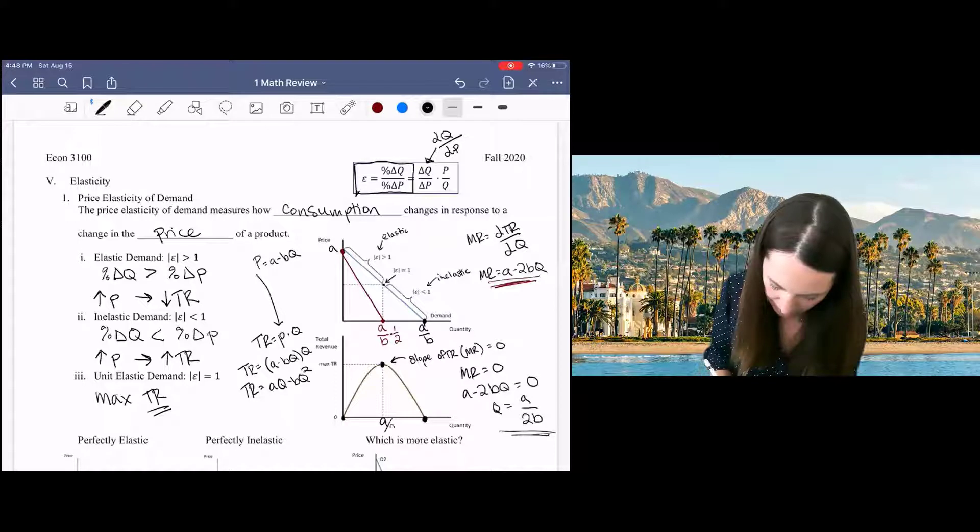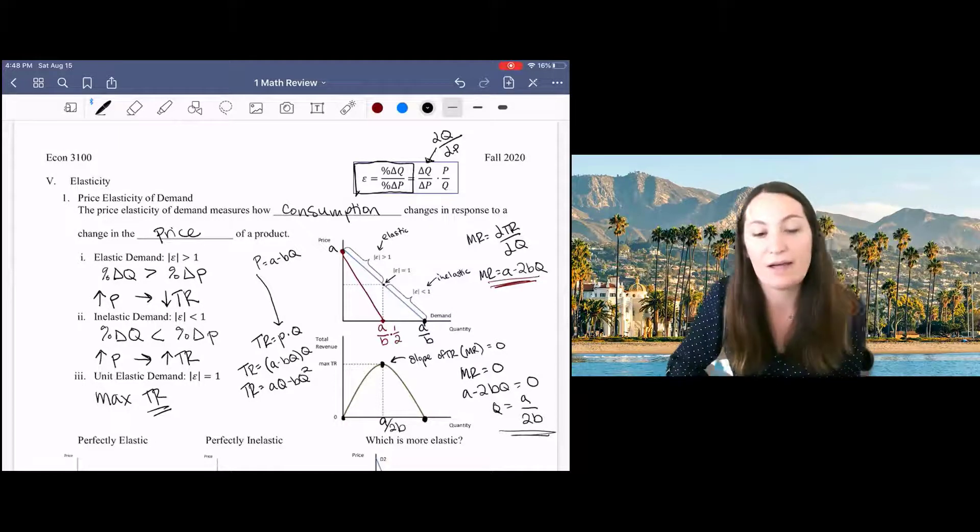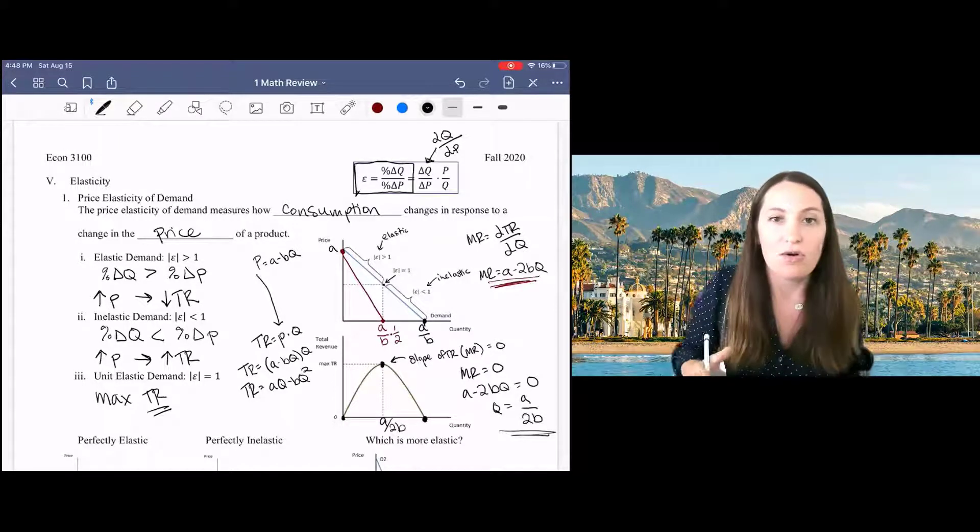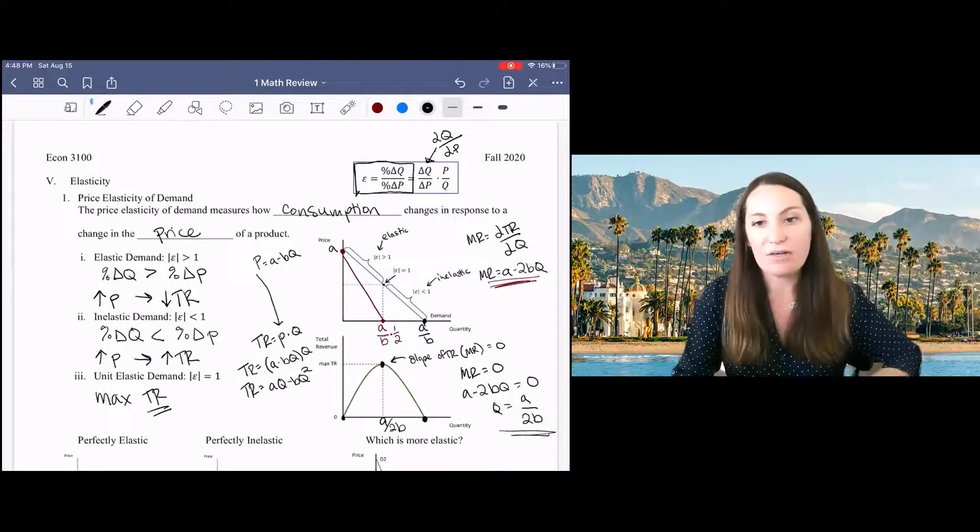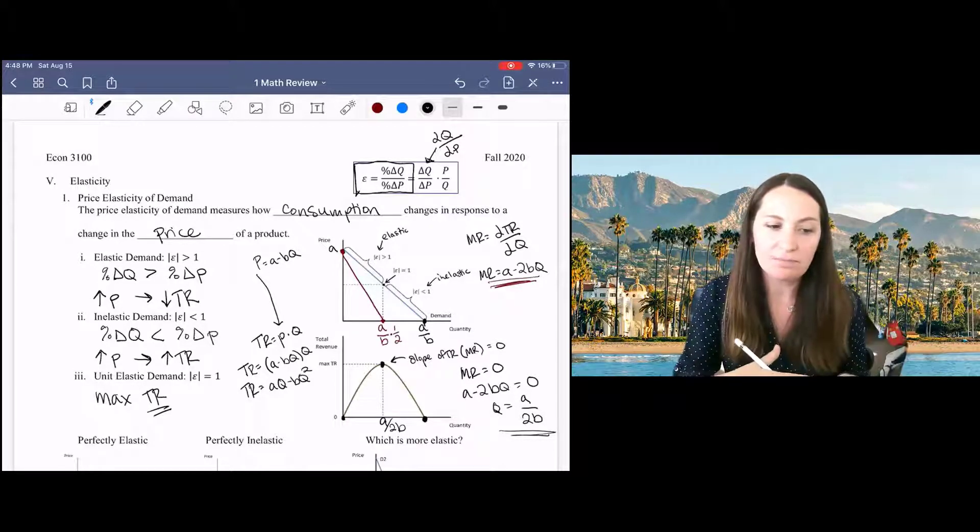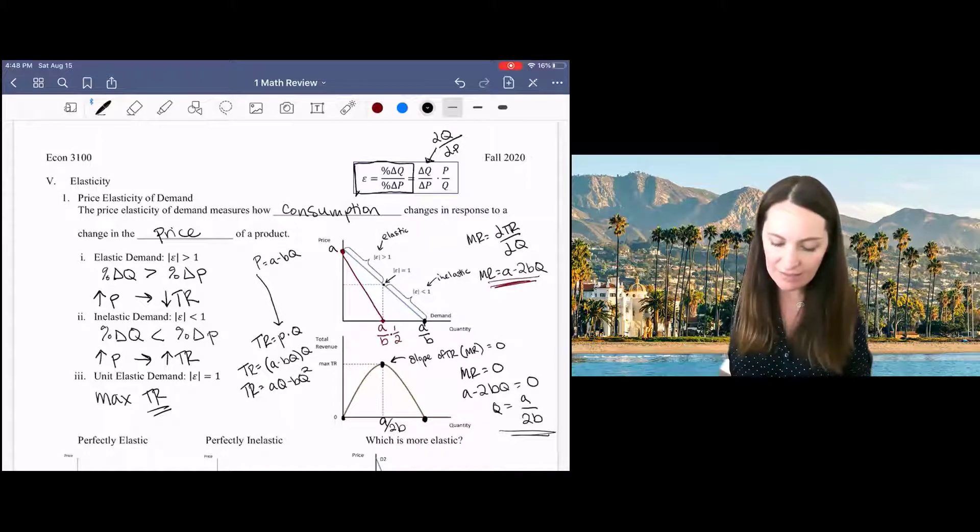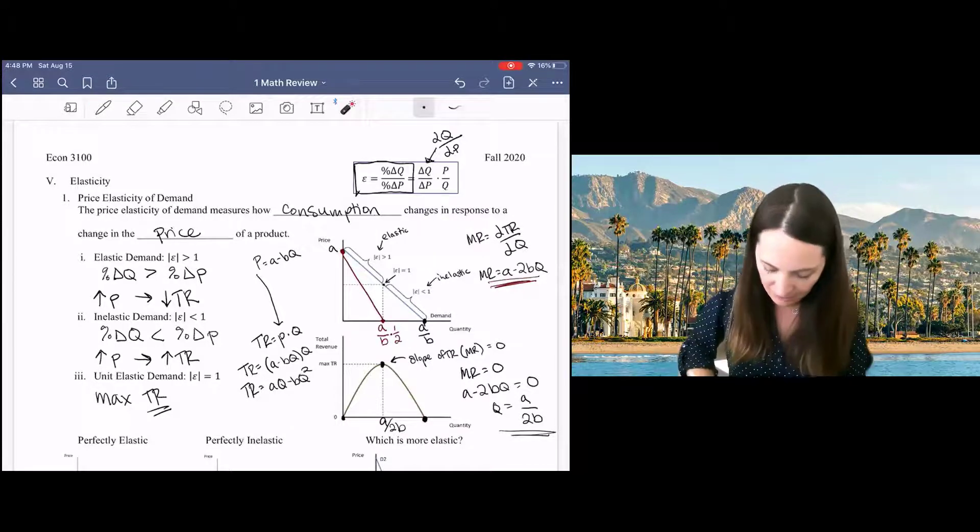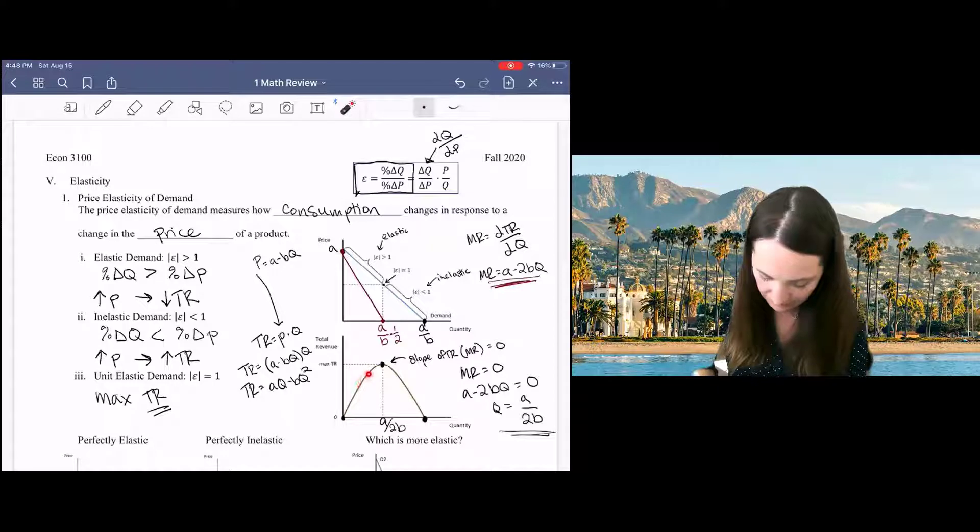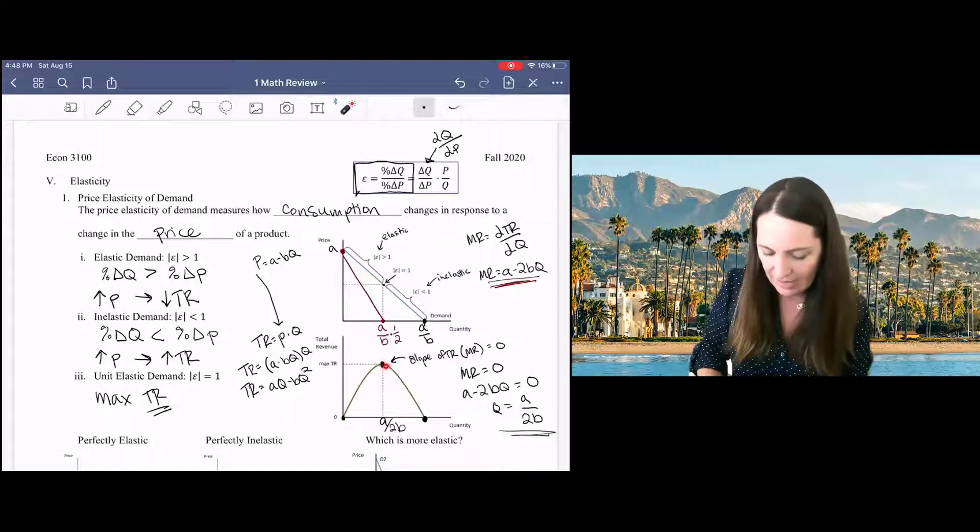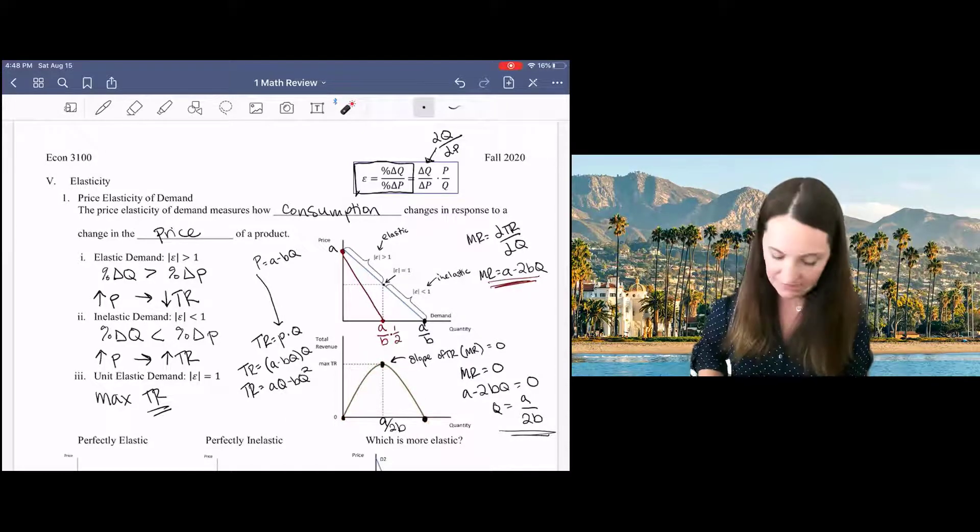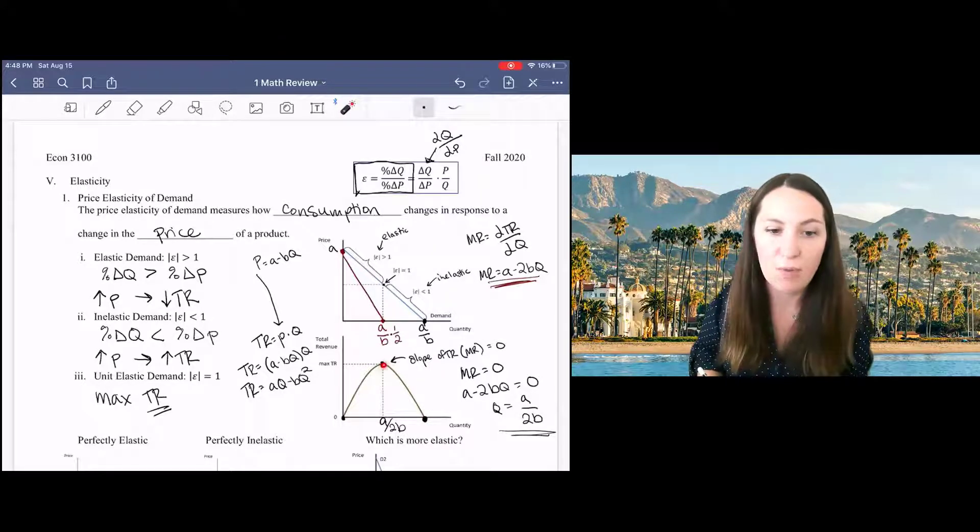So I know that for any straight line demand curve, total revenue is maximized at the midpoint, that's why marginal revenue falls to zero at that point. It's telling me that right up until the midpoint, the slope of my total revenue curve is positive, it's increasing, and after that it's negative, it's decreasing, and this is the maximum point right here.